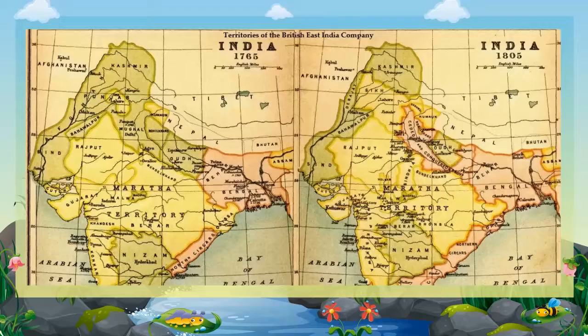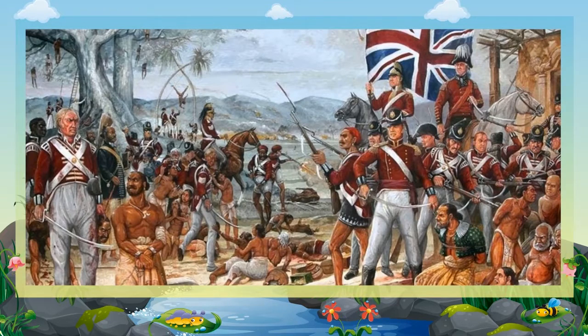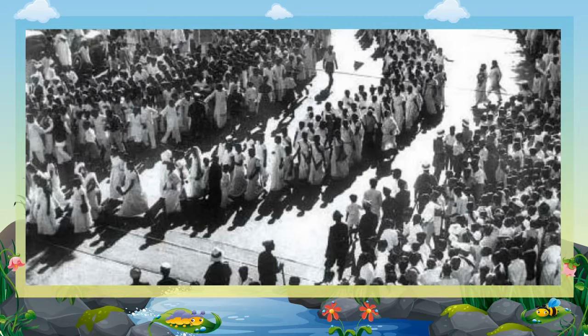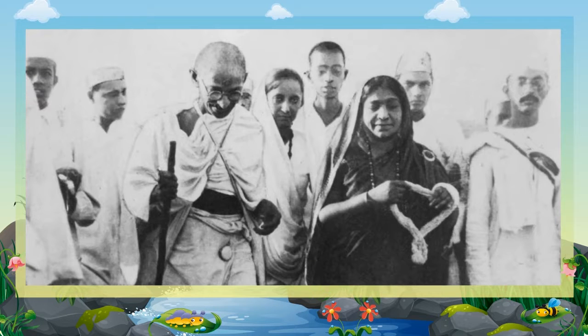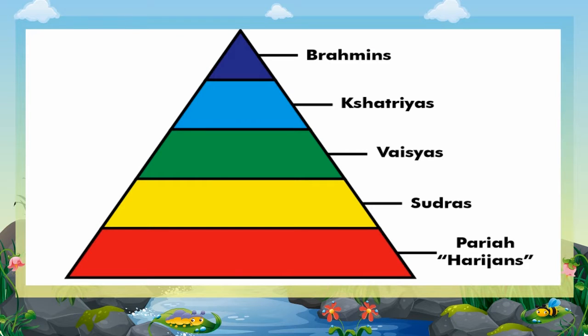Our Freedom Movement: 1857 to 1947. Introduction: The revolt of 1857 shook the foundation of British rule in India and kindled an urge in the hearts of Indians to become free. They felt that they should remove their shortcomings if they wanted to become free. There were many social evils that prevailed in society at that time. There were many European and Indian scholars who tried to eradicate social evils such as sati, child marriage, caste system, etc.